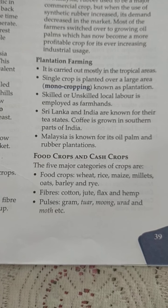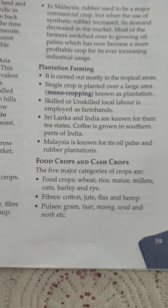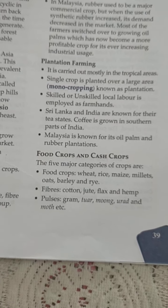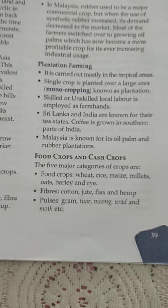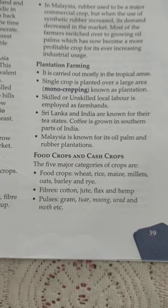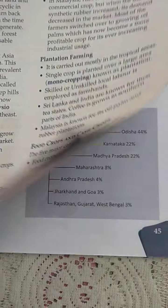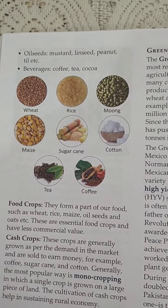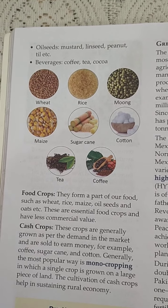The five major categories of crops are: food crops, fiber, and pulses. In food crops we have wheat, rice, maize, and millets. In fiber we have cotton and jute. In pulses we have gram, moong, and urad. The other categories are oilseeds — mustard and peanut — and beverages such as coffee and tea.